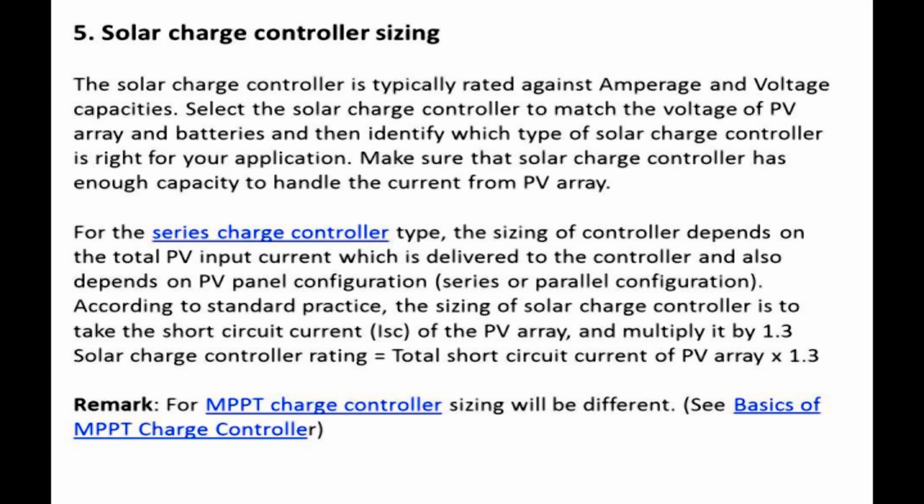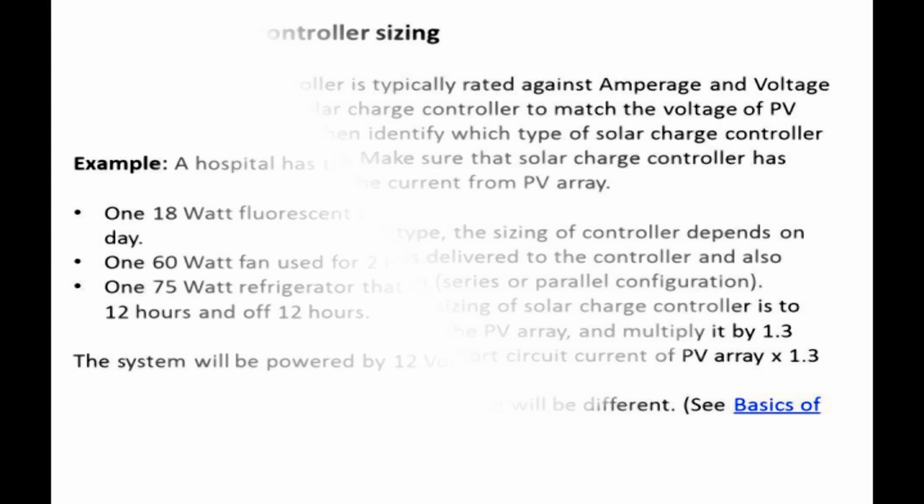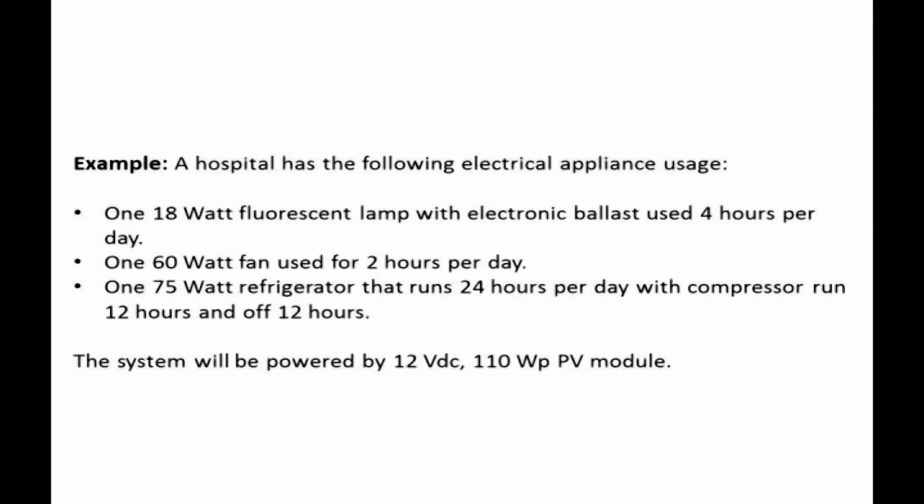According to standard practice, the solar charge controller is sized by taking the short circuit current (Isc) of the PV array and multiplying it by 1.3: Solar charge controller rating = Total Isc of PV array × 1.3. Note: For MPPT charge controller sizing, the method will be different — see the basics of MPPT charge controller.